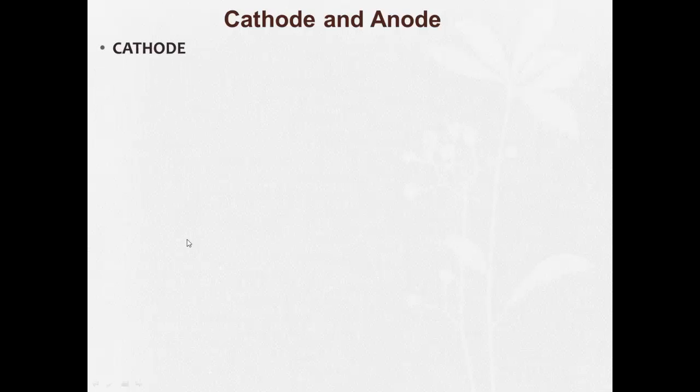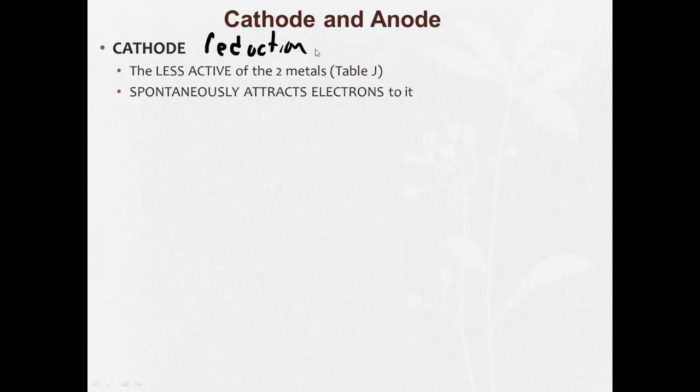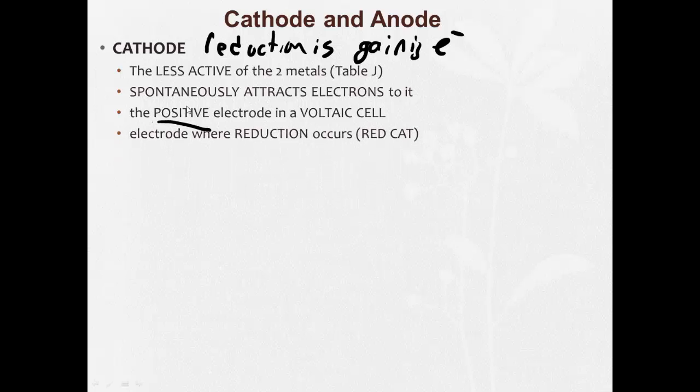So let's talk a little bit about the cathode and the anode. The cathode: the less active of two metals go in the cathode. And it's going to spontaneously attract electrons to it, because red cat, reduction is gaining electrons. So the electrons are going to be gained at the cathode. That's why it attracts electrons to it. And in a voltaic cell, this is the positive electrode. When I draw it out on the next slide, it'll make sense.